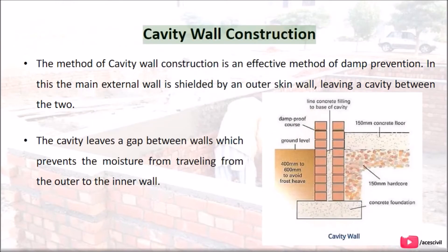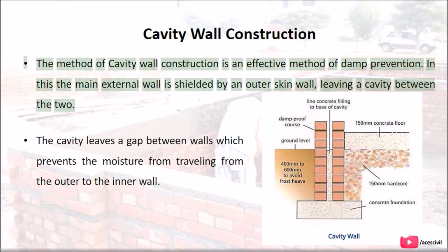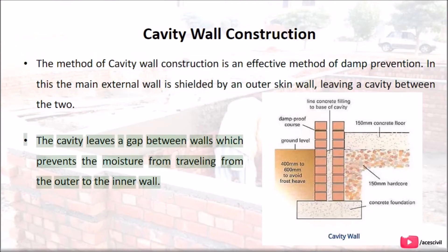Cavity wall construction: this is an effective method of damp prevention. The main external wall is shielded by an outer skin wall, leaving a cavity between the two. This cavity creates a gap between the walls which prevents moisture from traveling from the outer to the inner wall.